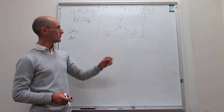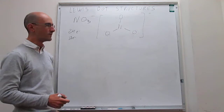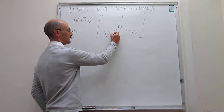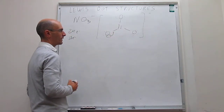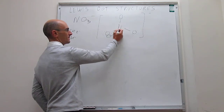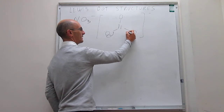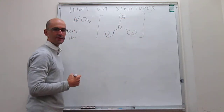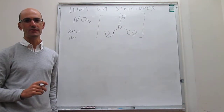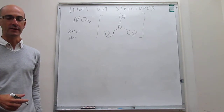Any one of the three oxygen atoms can take a lone pair and form a double bond with nitrogen — that would respect the octet of that oxygen and complete the octet for nitrogen. Since any of the three oxygens can do this, you would naturally expect to find three resonance structures, all of which satisfy the octet rule and all of which must be taken into consideration.